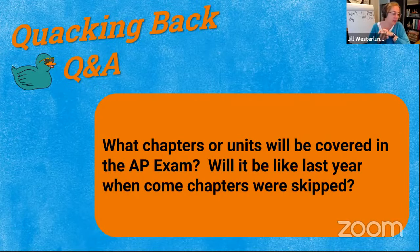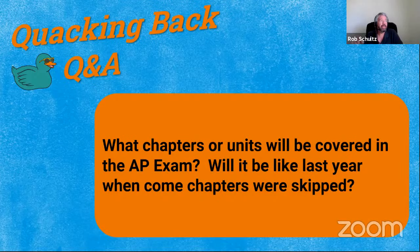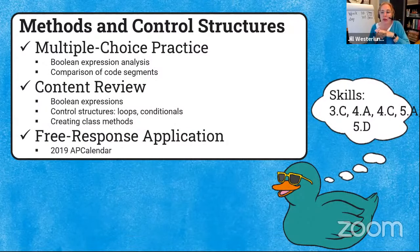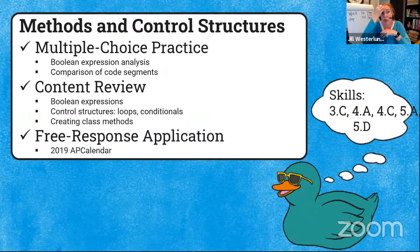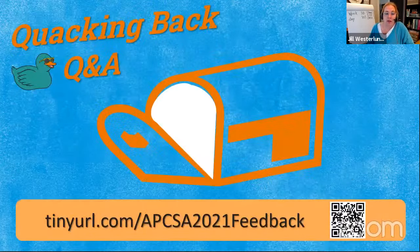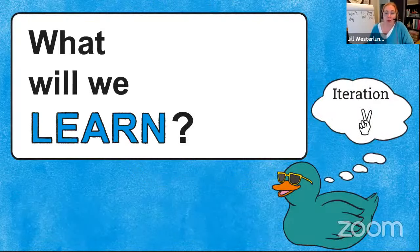Thanks for all the questions — keep sending them. We've got three more days. Don't forget to go back and look at Tuesday of last week if you haven't seen it, and make sure you're sending us your instantiation of your person objects so we can add you to our map. Today we're going over methods and control structures — multiple choice content review, and then the 2019 AP exam question one: AP Calendar.